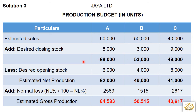Less the desired opening stock. A's opening stock = 6,000; B = 4,000; C = 8,000. So estimated net production: A = 68,000 − 6,000 = 62,000; B = 53,000 − 4,000 = 49,000; C = 49,000 − 8,000 = 41,000.